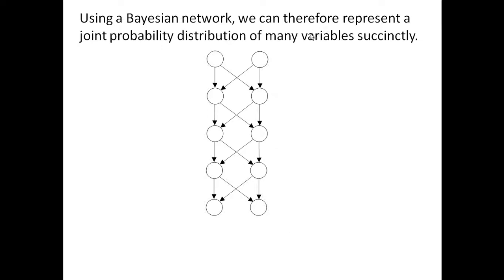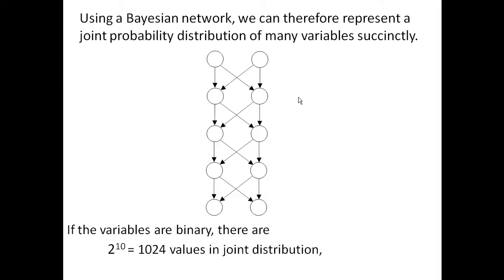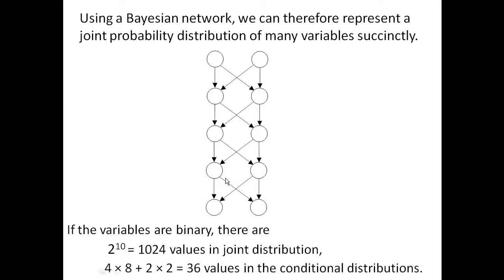What is the value of a Bayesian network? Using a Bayesian network we can represent a joint probability distribution of many variables very succinctly. Suppose we have a situation where the variables are binary and each variable has two parents. There are 2 to the 10th equal 1,024 values in the joint distribution, because if there are 10 variables each one can have any one of two values. But with a quick calculation there are only 36 values in the conditional distributions. So an advantage of a Bayesian network is it can represent a very big joint probability distribution very succinctly.